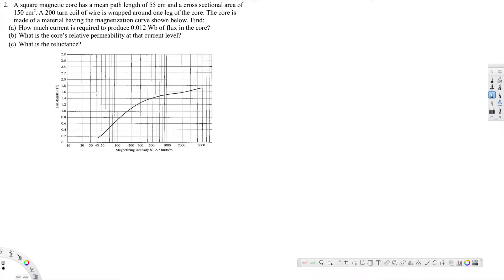What's going on guys, let's look at this problem. This question is asking about a square magnetic core that has a mean path length of 55 centimeters and a cross-sectional area of 150 centimeter square. A 200 turn coil of wire is wrapped around one leg of the core.